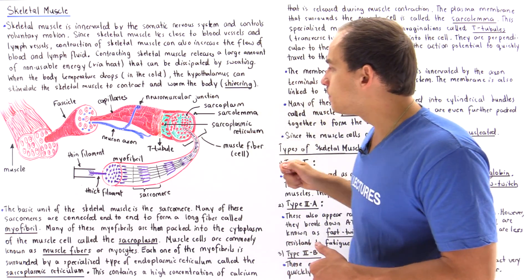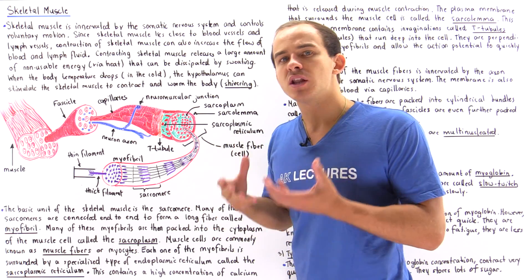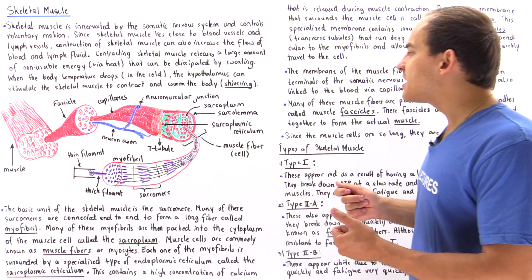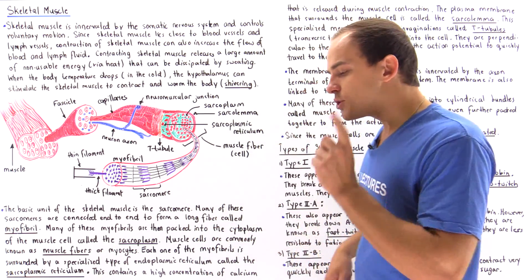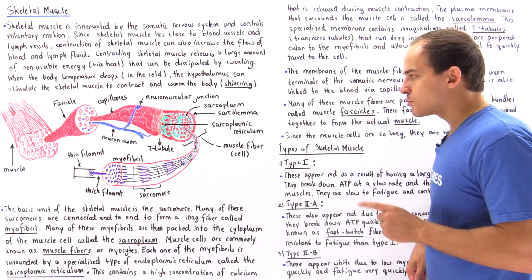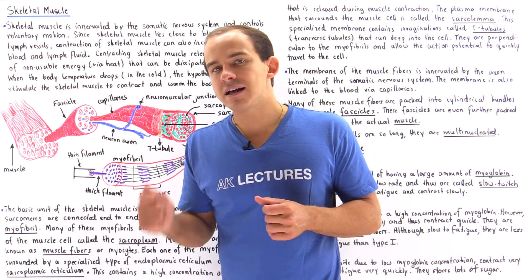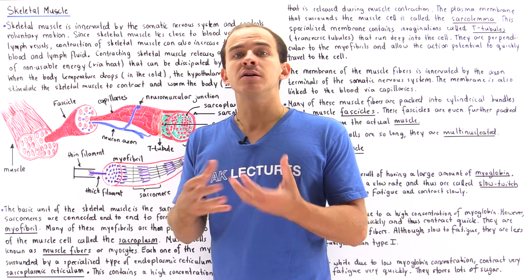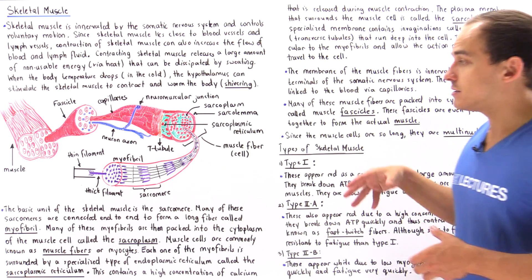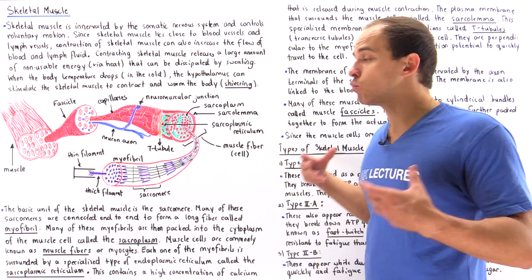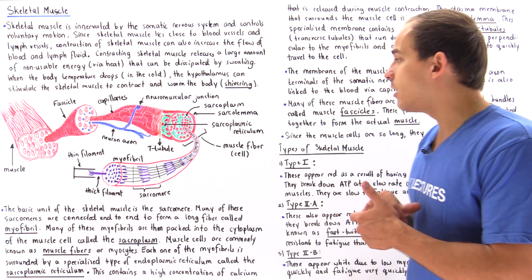The cytoplasm of the muscle fiber has its own name — it is known as the sarcoplasm. Inside the sarcoplasm, around each one of the myofibrils, we have a specialized type of endoplasmic reticulum known as the sarcoplasmic reticulum. What's special about it is that it contains a high concentration of calcium, which is involved in muscle contraction. The sarcoplasmic reticulum releases calcium and that induces the contraction of our muscle.